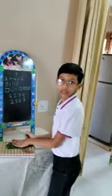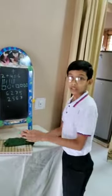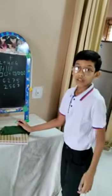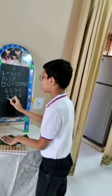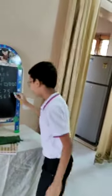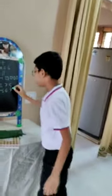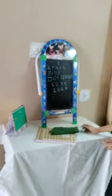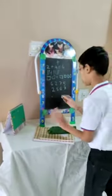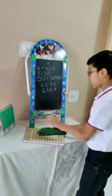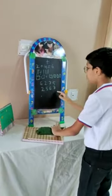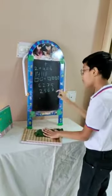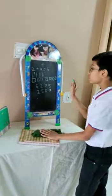Then there is descending order. Ascending order starts with the smallest and ends with the greatest number. Now for descending order, we have done smaller to bigger, but now we will go from big to small.